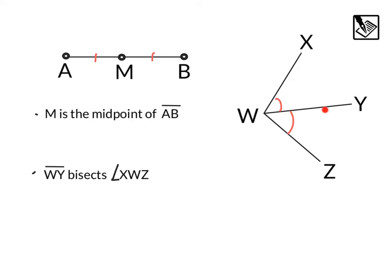Here we have kind of the same situation, but with angles. We've got angle XWY congruent to angle YWZ. We can see with these arcs showing that they're congruent. So we can say that segment WY bisects or splits into two equal pieces angle XWZ. Midpoint and bisect are telling you that the individual halves are congruent to one another.